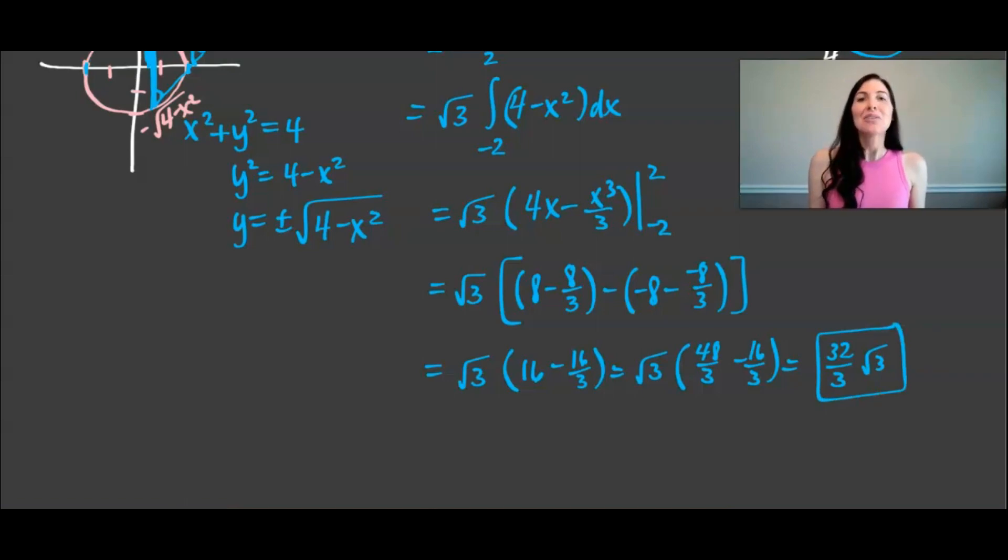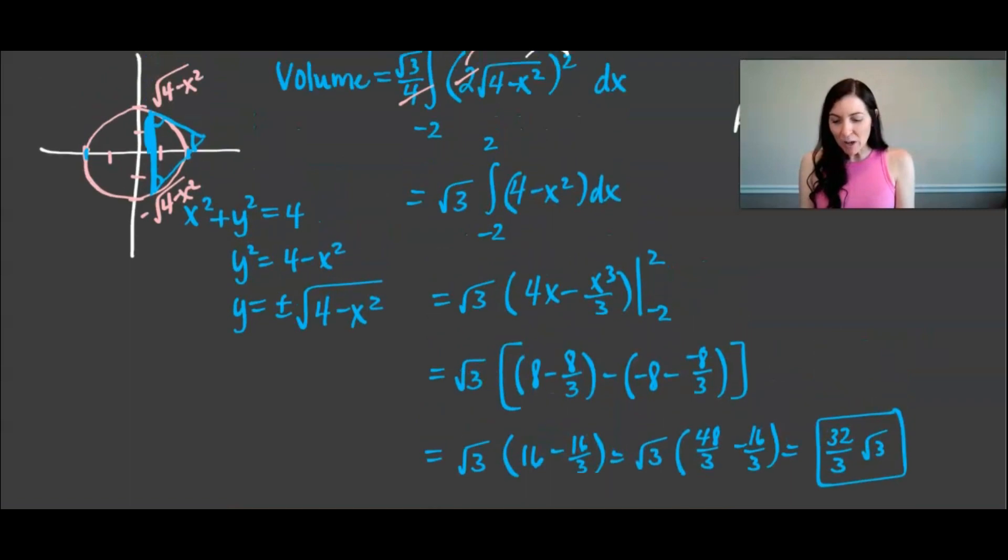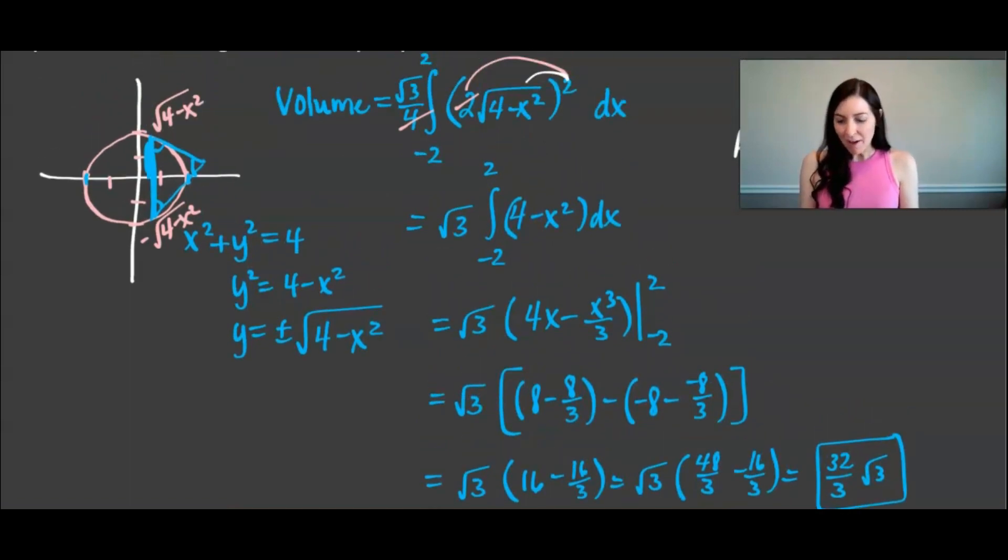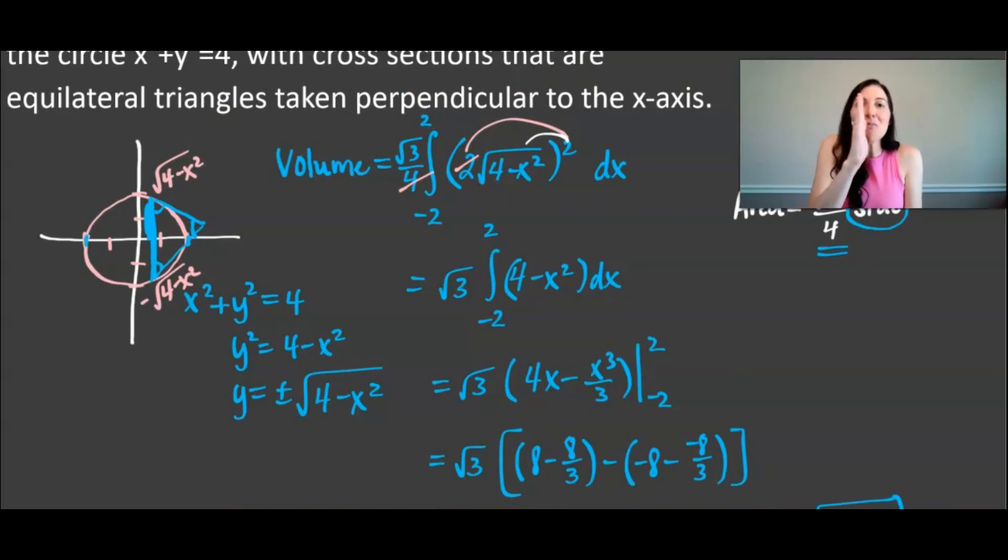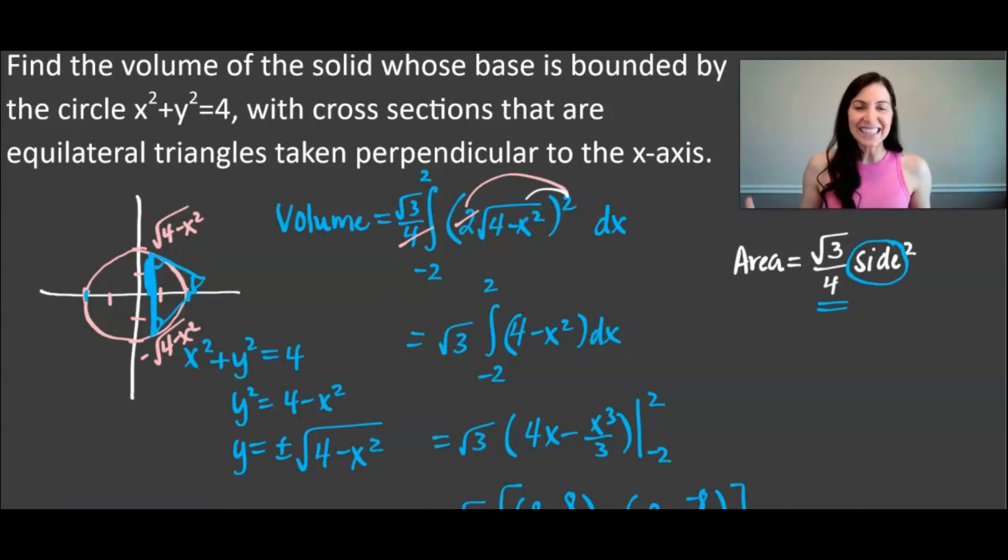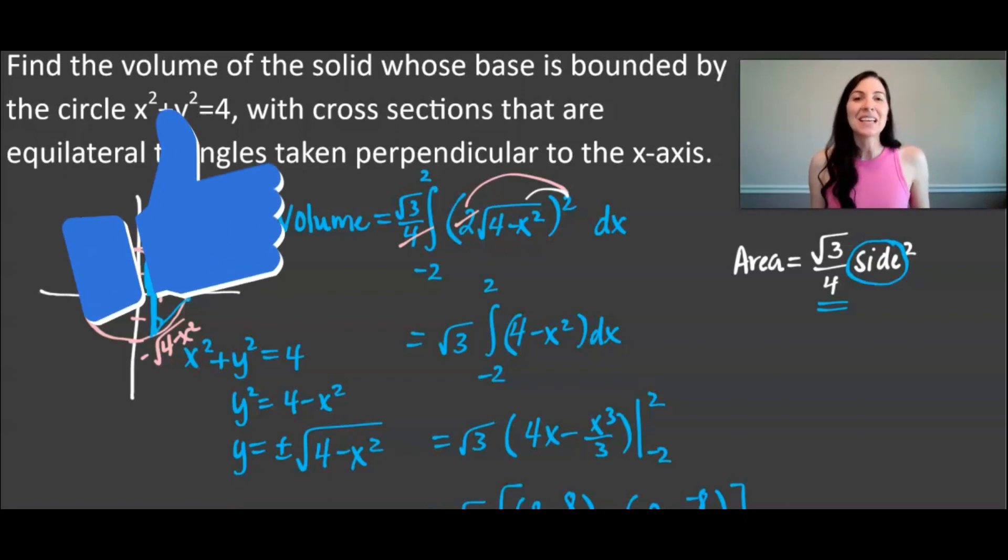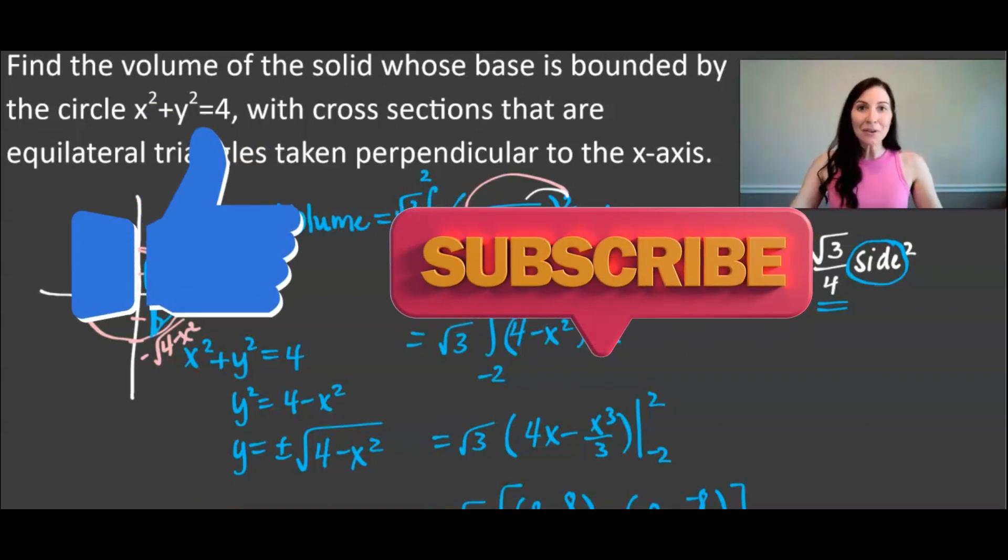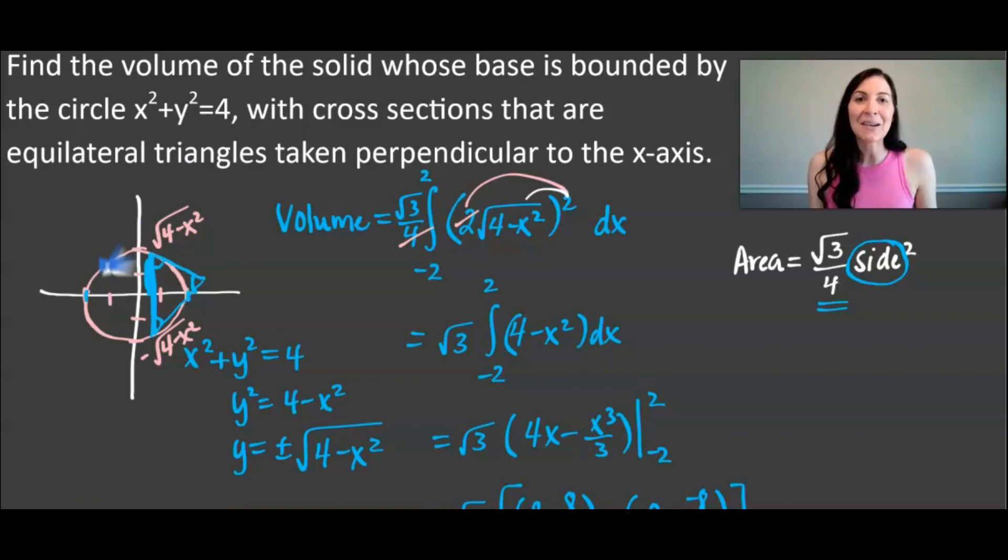And how cool is that? We just found that by hand. So we get 32 thirds root 3 and once again what we found is the volume of a solid if we lined up an infinite amount of equilateral triangles between the x value of negative 2 and the x value of positive 2 with the base of a circle. And remember what we used to find it was calculus. Calculus is fascinating. It allows us to find such interesting things and I hope you found this video interesting as well. If you did make sure to give it a like and subscribe so that you can see other calculus videos to help you in your learning and also to see the fascinating world of calculus. Have a great day everyone and we'll see you in the next video. Bye!